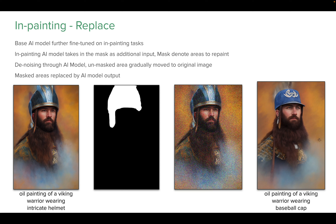We can use this technique to replace an object, add to an existing image, or remove something from an image. For example, here we have an image where a Viking is wearing a helmet. We want to replace the helmet with a baseball cap but keep the Viking warrior the same. We create a mask covering the helmet portion, modify the prompt to say 'wearing a baseball cap,' and click generate. We get the Viking warrior wearing a baseball cap with the helmet replaced.